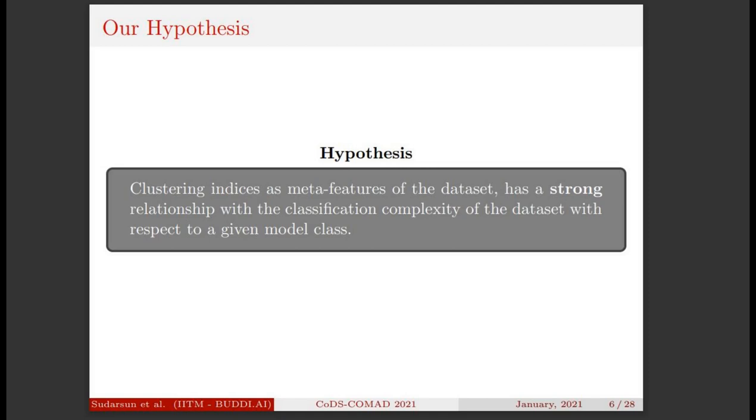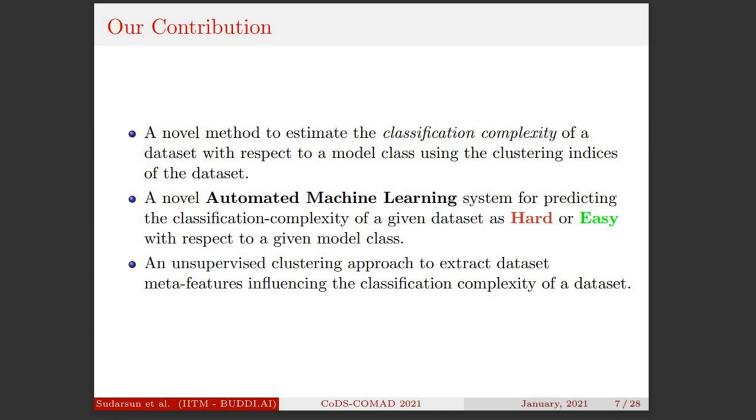As we are familiar with the concepts of classification complexity and clustering indices, let us take a look at our approach. The intuition behind our approach is straightforward. Clustering indices reflect different properties of a dataset. We believe that using clustering indices as meta features of a dataset, we can determine the classification complexity. More formally, we hypothesize that the clustering indices of a dataset has a strong relationship with its classification complexity. The three main contributions from this work are: one, a novel method to estimate classification complexity of a dataset using its clustering indices; two, a fully automated machine learning system which predicts the classification complexity of a dataset; three, a clustering-based approach to extract meta features of a dataset.